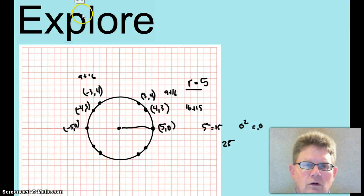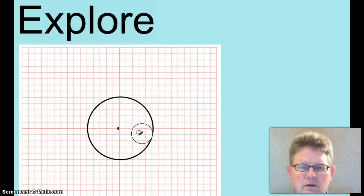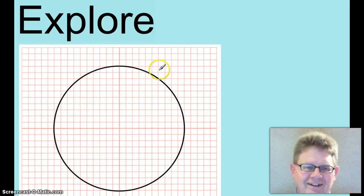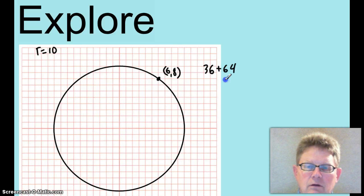Let's see if this works all the time. Let's make the radius bigger. Now I have a circle with a radius of 10. That point right there is 6, 8. Square 6. Square 8. 36 and 64. That's 100. Hey. What's 10 squared? 100.